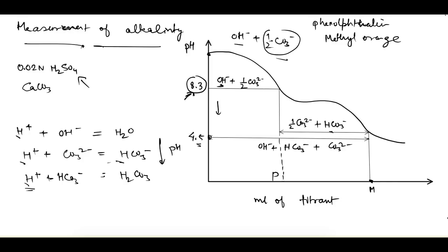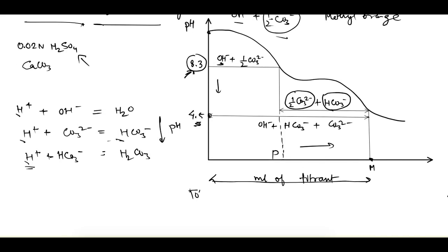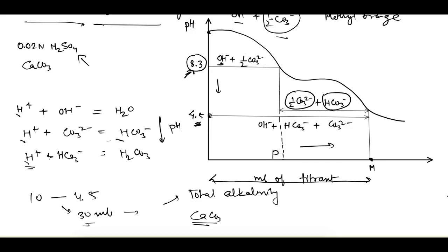As we further add acid, the pH continues to come down. At a pH of 4.5, the remaining half of the carbonate ions and all the bicarbonate ions are neutralized. The total amount of acid required from the initial pH down to 4.5 gives you the total alkalinity. For example, if the initial pH was 10 and we reduce it to 4.5 using 30 ml of acid, then 30 ml of acid represents the total alkalinity, which we then convert to CaCO₃ equivalent.